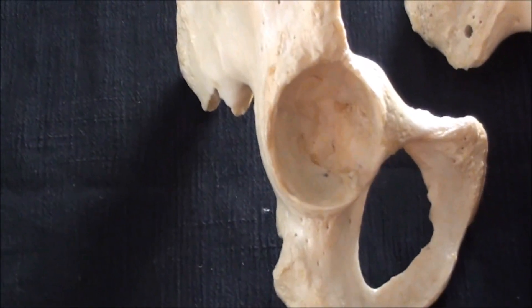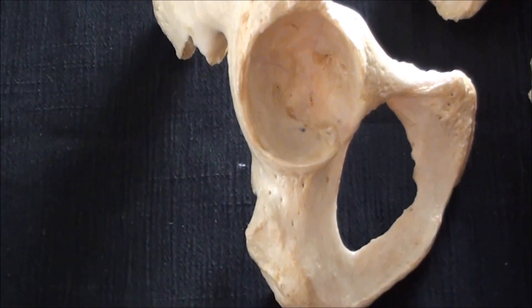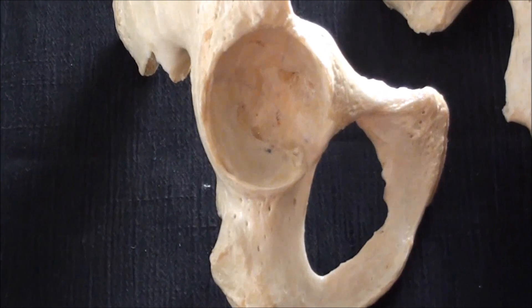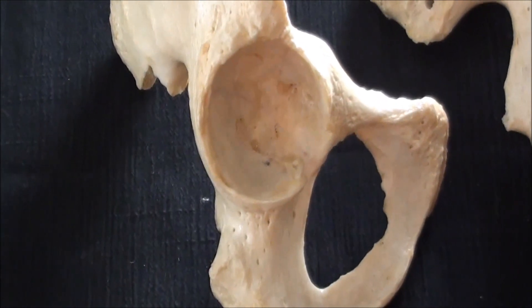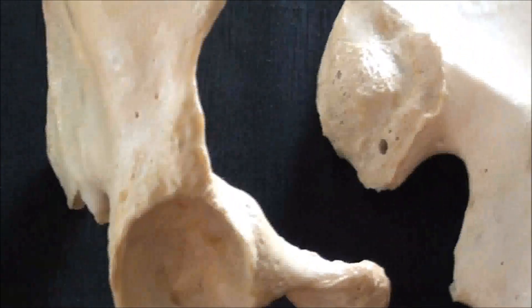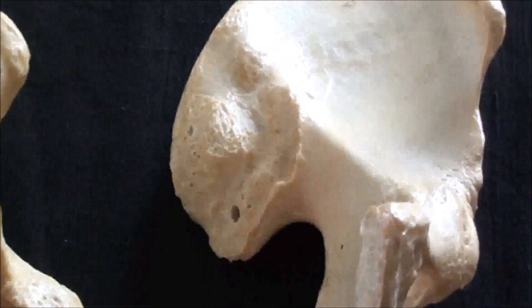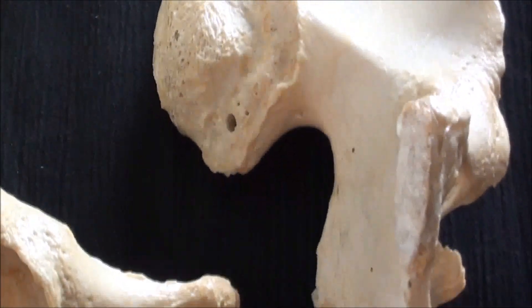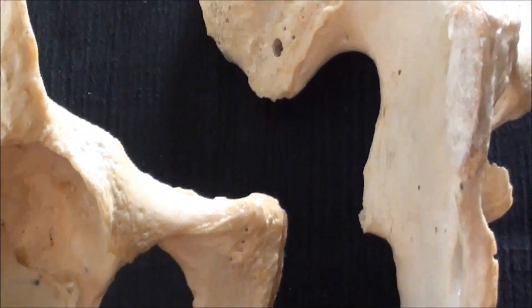The biggest opening that we have is obturator foramen, and just above it is a huge articular socket for the head of the femur which is known as the acetabulum. Next to it is the left-sided hip bone which has been left flat on the table in order to show a little bit more of its internal aspect.